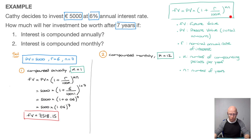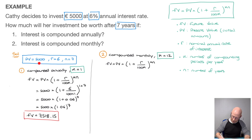Copying the formula again: FV equals PV times (1 plus R over 100 times K) raised to the power of KN. Replacing PV with 5,000, R with 6, K with 12, and N with 7, this becomes 5,000 times (1 plus 6 over 100 times 12), raised to the power of 12 times 7.